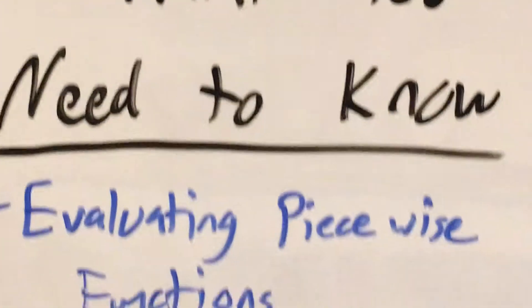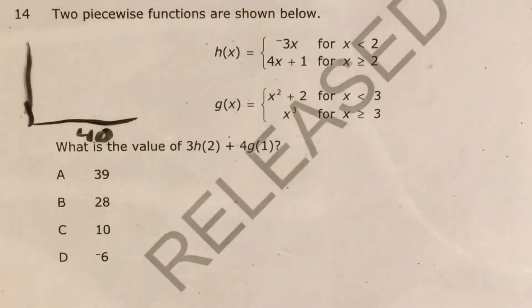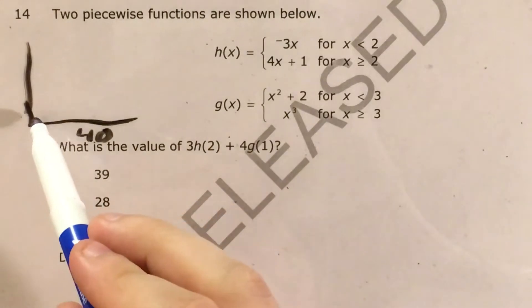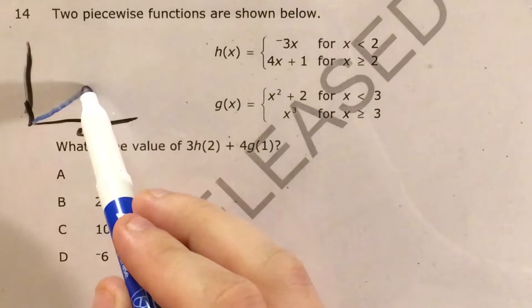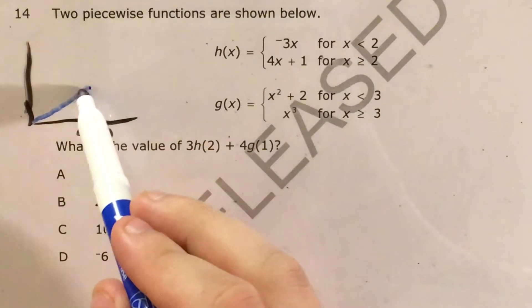Now the big skill this is testing is evaluating piecewise functions. So what is a piecewise function? Well my favorite example of one of these is thinking about an hourly wage job where you would end up making let's say $8 an hour until you hit 40 hours in a given week.